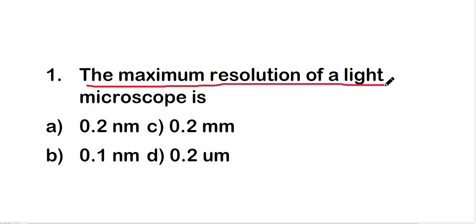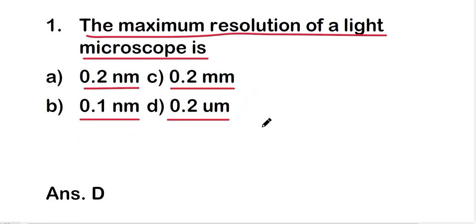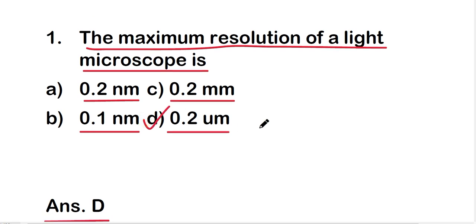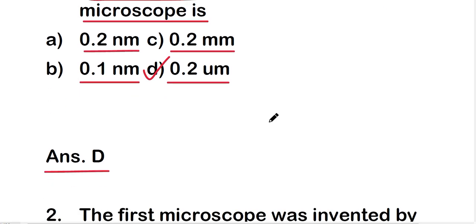The first question: the maximum resolution of a light microscope is 0.2 nanometer, 0.1 nanometer, 0.2 millimeter, or 0.2 micrometer? The right answer is option D — 0.2 micrometer. So the maximum resolution of a light microscope is 0.2 micrometer.